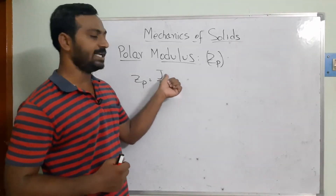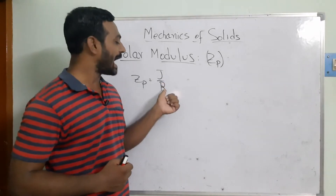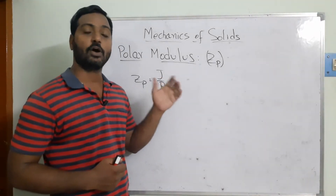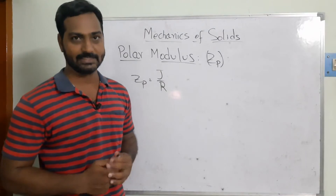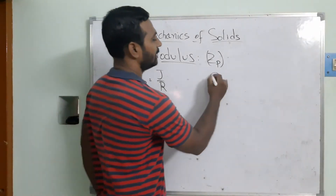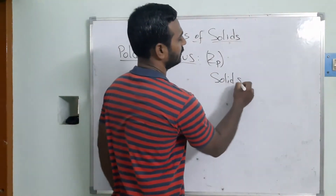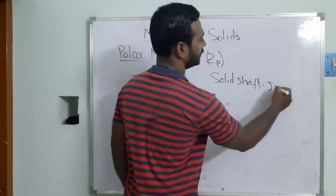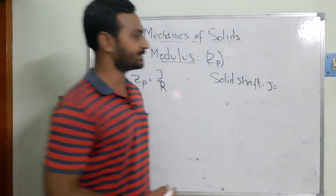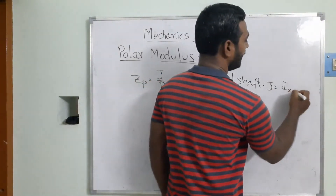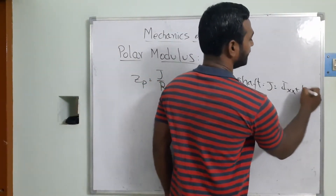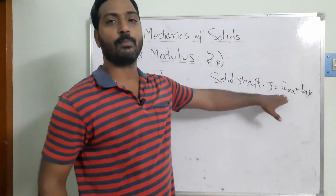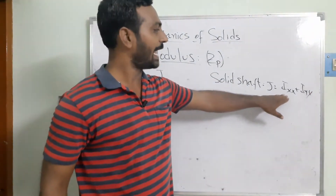Here, J is the polar moment of inertia and R is the radius of the outermost layer we are considering. For a solid shaft, the value of J is nothing but I_xx plus I_yy — that is the moment of inertia of the shaft with respect to the x-axis and the y-axis respectively.